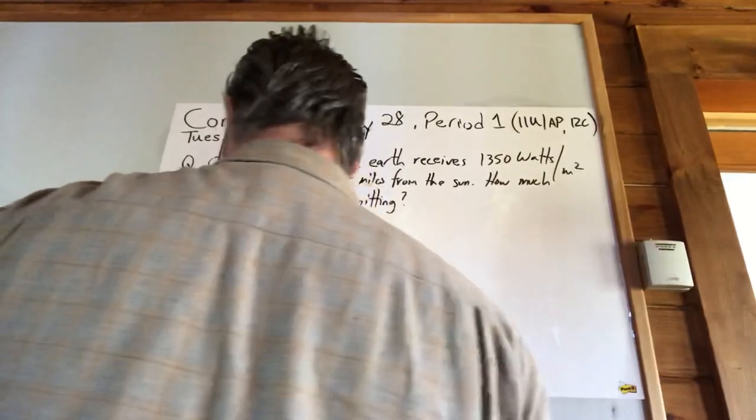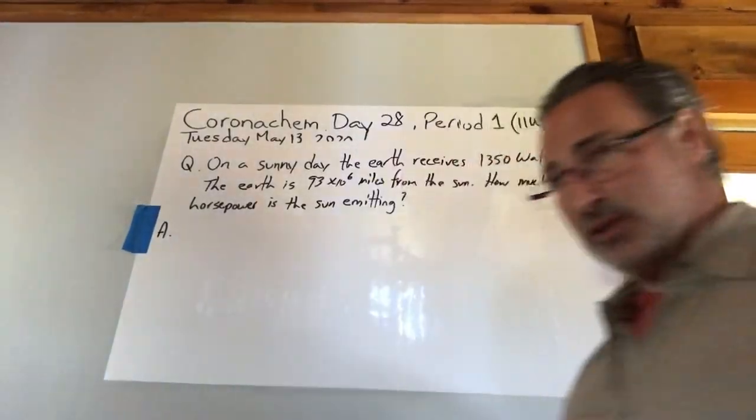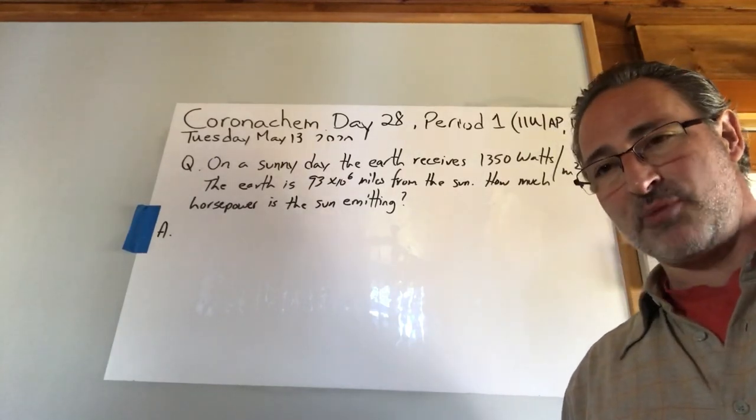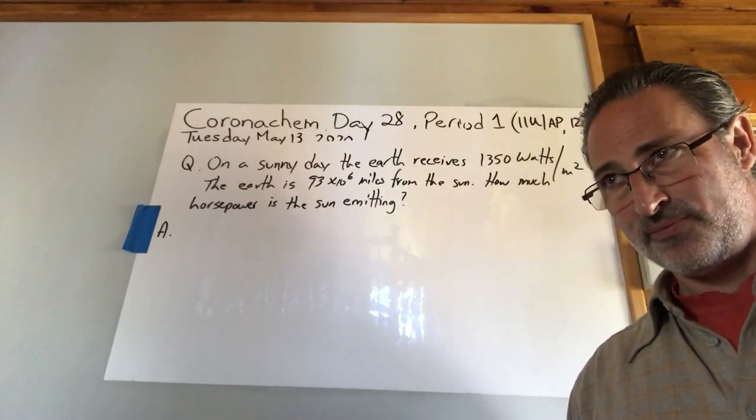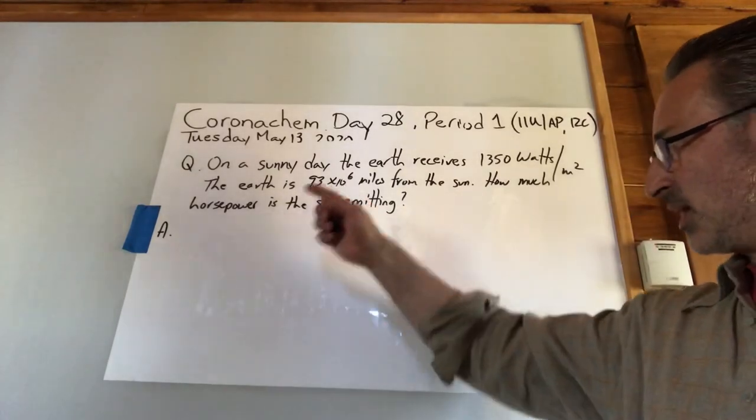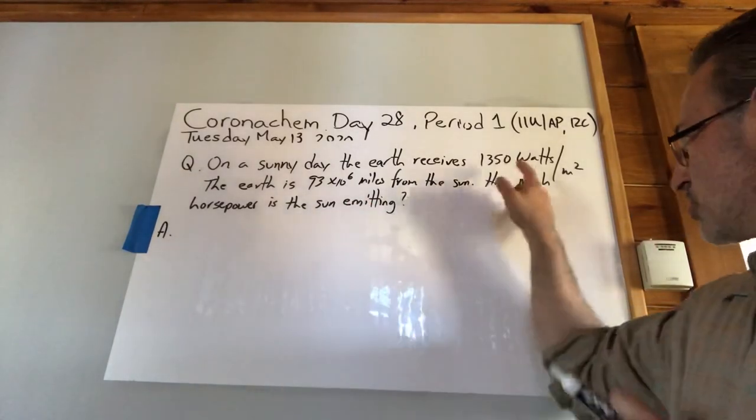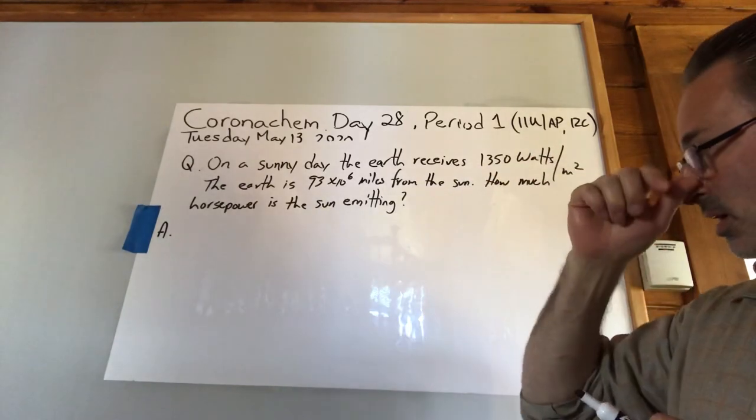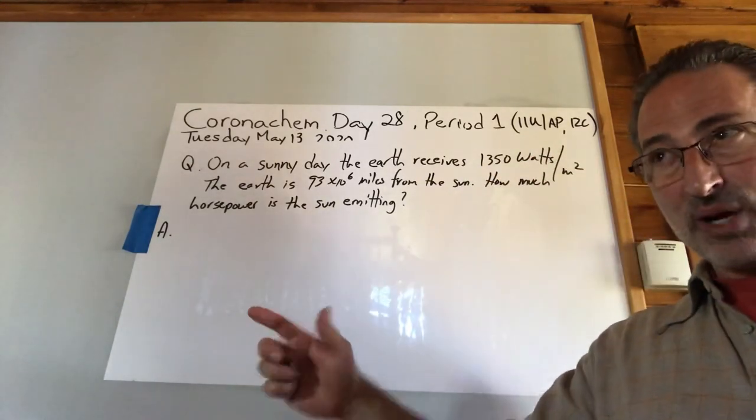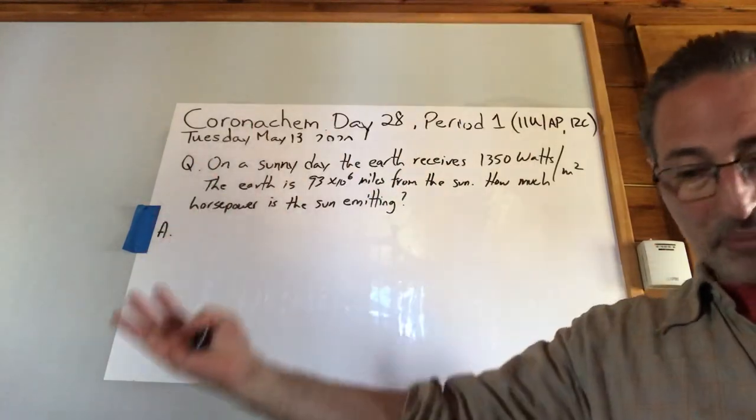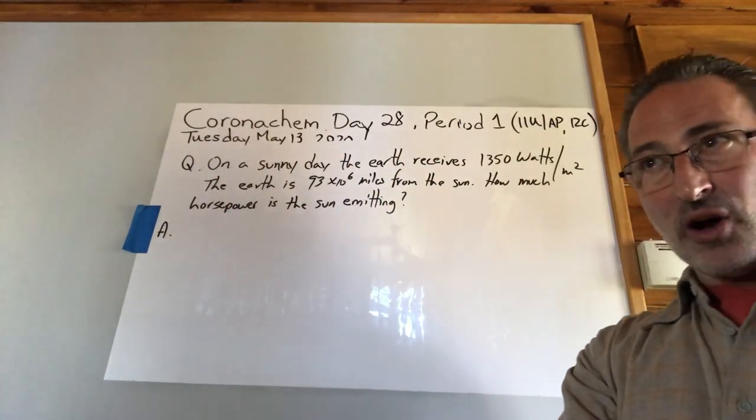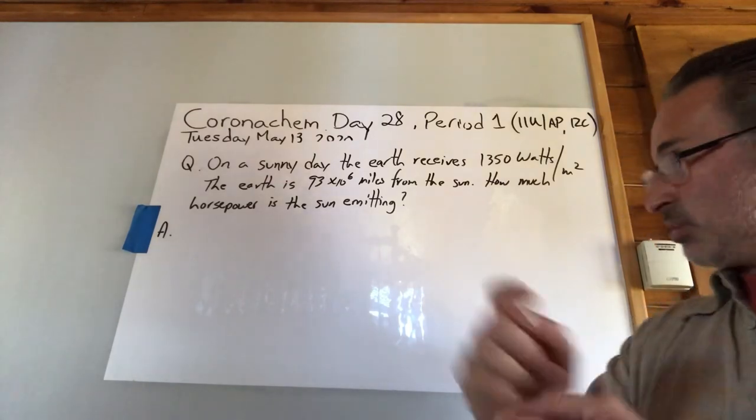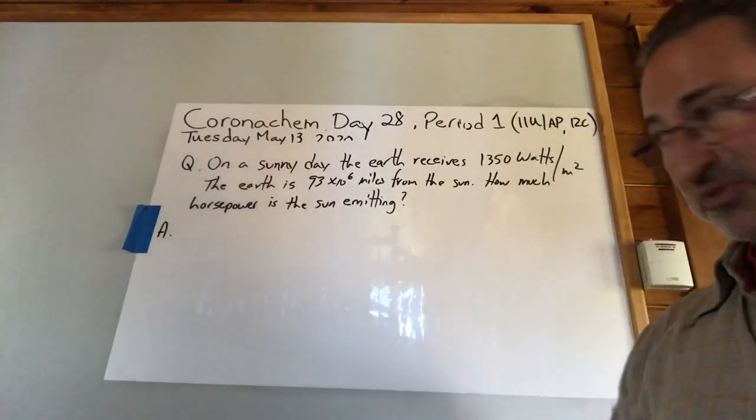Well, the answer is this. Let's pretend the sun was inside a giant sphere that absorbed all of its energy. At this distance from the sun, 93 million miles, every square meter is receiving 1,350 watts of energy. So, if you're 93 million miles away, if you made a sphere that encompassed the entire sun and captured all of the energy emanating from the surface of the sun, you would simply have to calculate the inner surface area of that sphere.